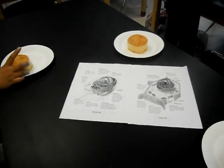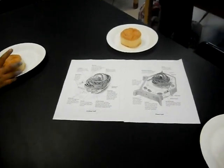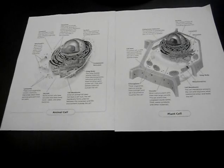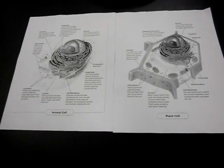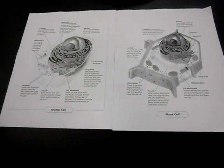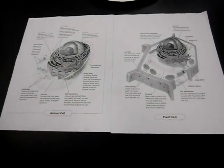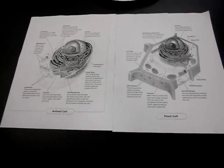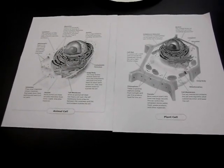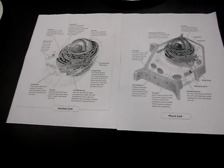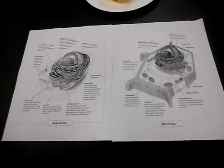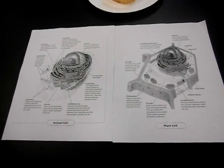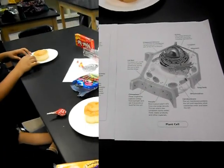Today we're going to be talking about how to make an edible plant or animal cell model. Here's where we start up with our drawings. With the plant cell, we have 10 parts we need to make and put on our model. And then we have 9 parts to put on our model for the animal cell.